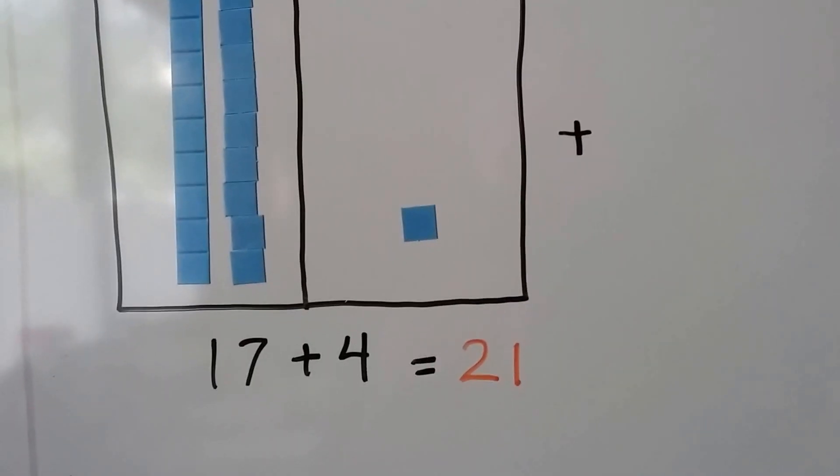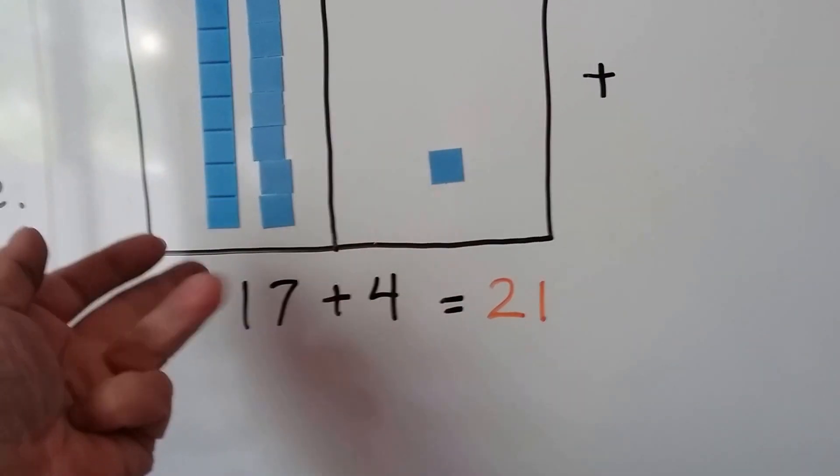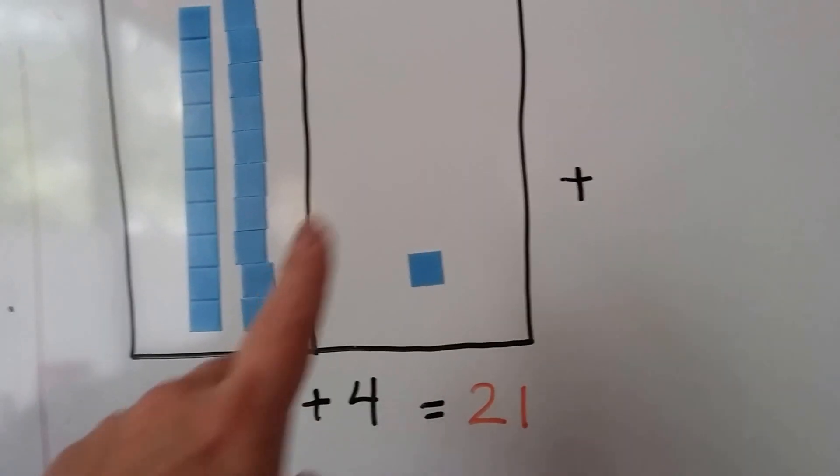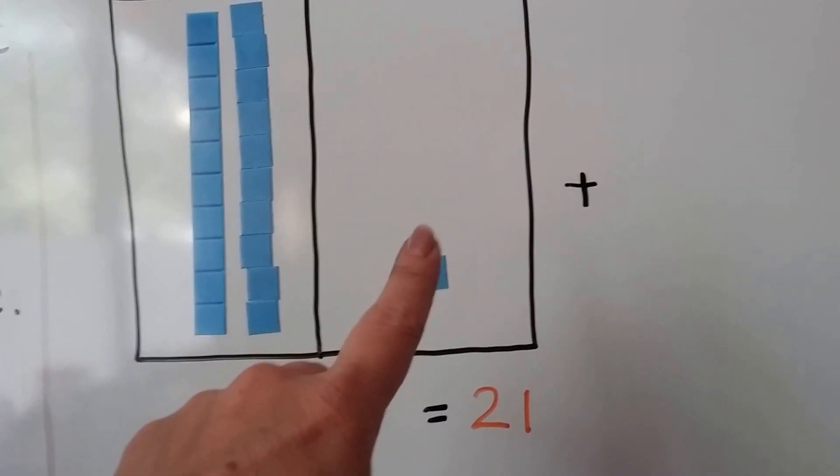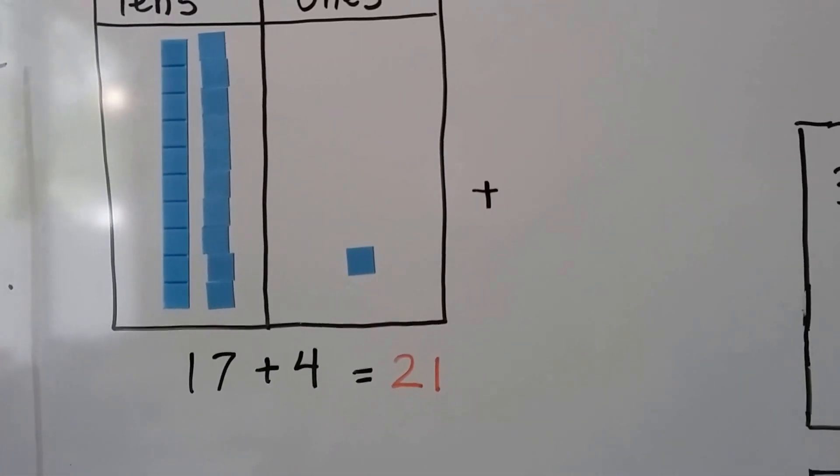Let's check that out. Let's count on. 17, 18, 19, 20, 21. It is 21. So we can take those ones, make a 10, and put it into the tens column. See that? That's regrouping.